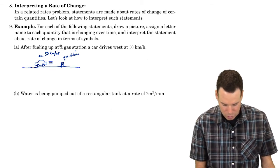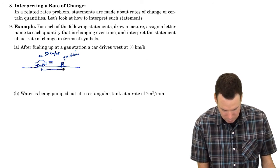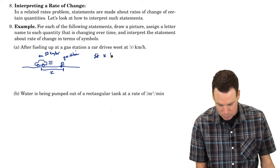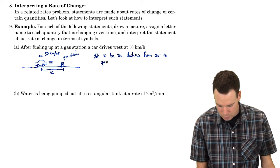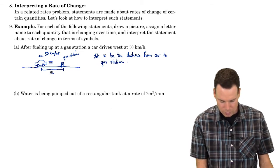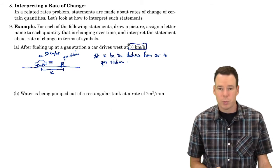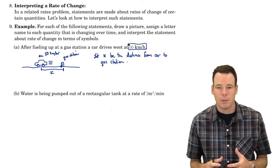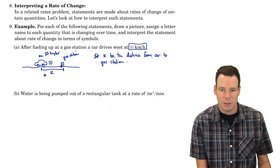We need to assign a letter name to each quantity. The distance the car is from the gas station is going to be important, so we'll call that x — let x be the distance from car to gas station. The reason we introduce x is that we're given a rate of change of 50 kilometers per hour, which is the speed of the car, meaning it's the rate of change in its position — in other words, the derivative of its position.